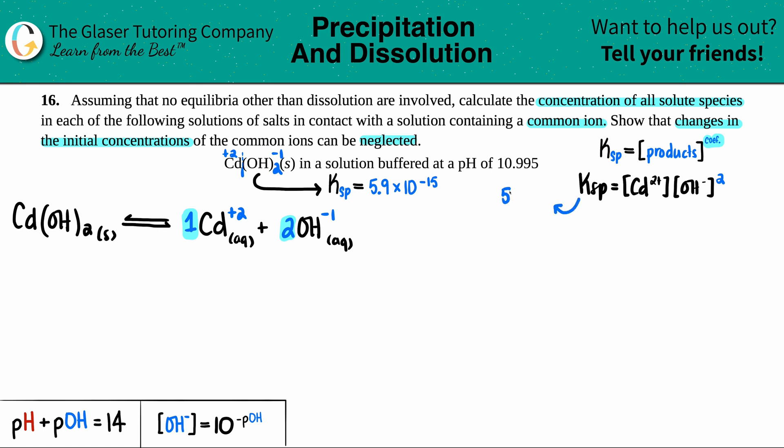We know that the Ksp is 5.9 times 10 to the negative 15th, but I don't know what the cadmium or the hydroxide concentration is. So that's when I'm going to start using variables. However, this is where you go back into the question just to see if you have any other information or any ions that may be influencing what we're starting with here. They did tell us that we had a pH of 10.995. Why would they give us a pH value? Can I go from a pH to a Cd concentration? Nah. But can I go from a pH to an OH⁻ concentration? Yep.